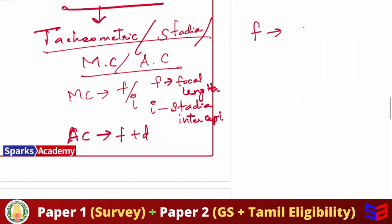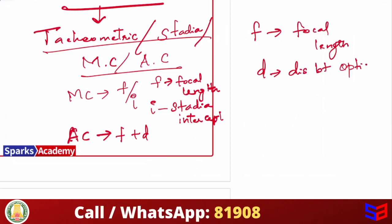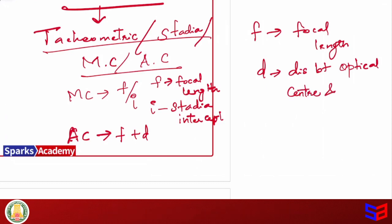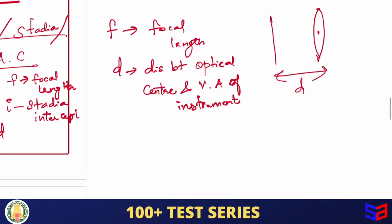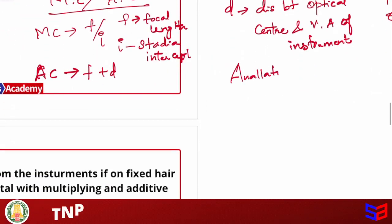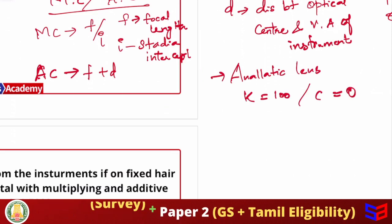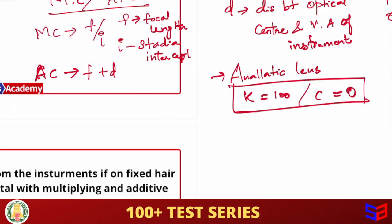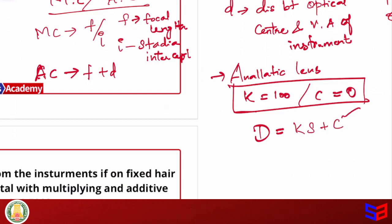The additive constant is f plus d, where f is the focal length and d is the distance between the optical center and the vertical axis of the instrument. When we use an analytic lens in tachymetry, the multiplying constant value becomes 100 and the additive constant value becomes 0. This makes measurements easier — using D = Ks + C, if k is 100 and c is 0, the calculation is simple. That's why we use an analytic lens.